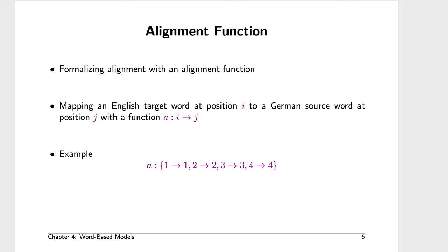We can formalize this as a function that takes an English target word position as the argument and returns the corresponding German word index position that the English word aligns to. In the simple example, this alignment function maps: one aligns to one, two aligns to two, three aligns to three, and four aligns to four. The number on the left side of the arrow is the English word position; the number on the right side is the German word position.